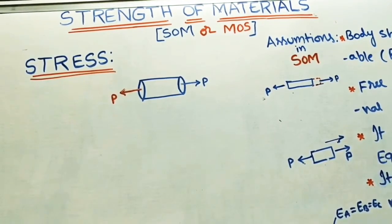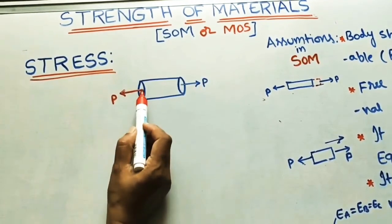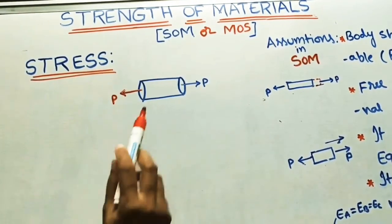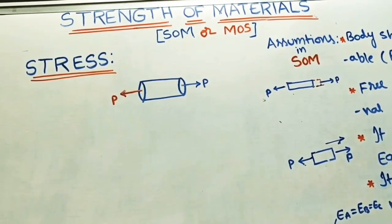According to Newton's third law, for equal action there is always equal and opposite reaction for getting the equilibrium. Now this body is in equilibrium.